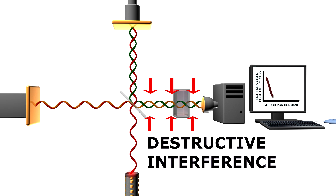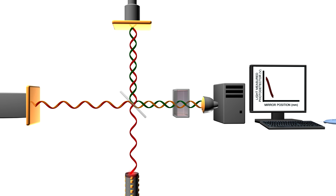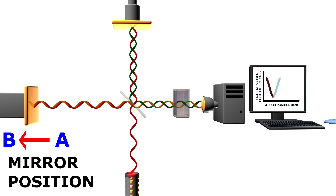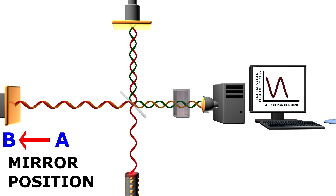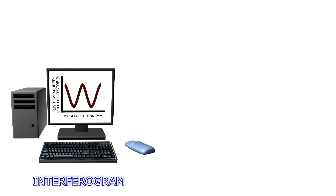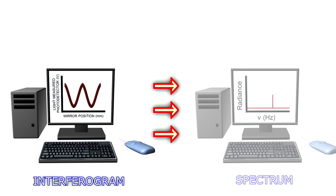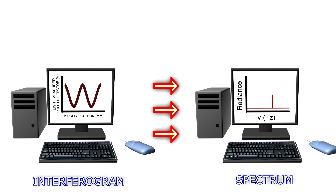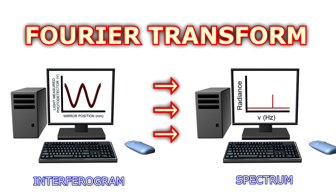That's what we call destructive interference. So, in order to carry out a measurement, the mirror is moved from point A to B, and as a result we get an interferogram by measuring the intensity of the radiation that reaches the detector. This interferogram can then be converted into a spectrum through a process known as Fourier transform.